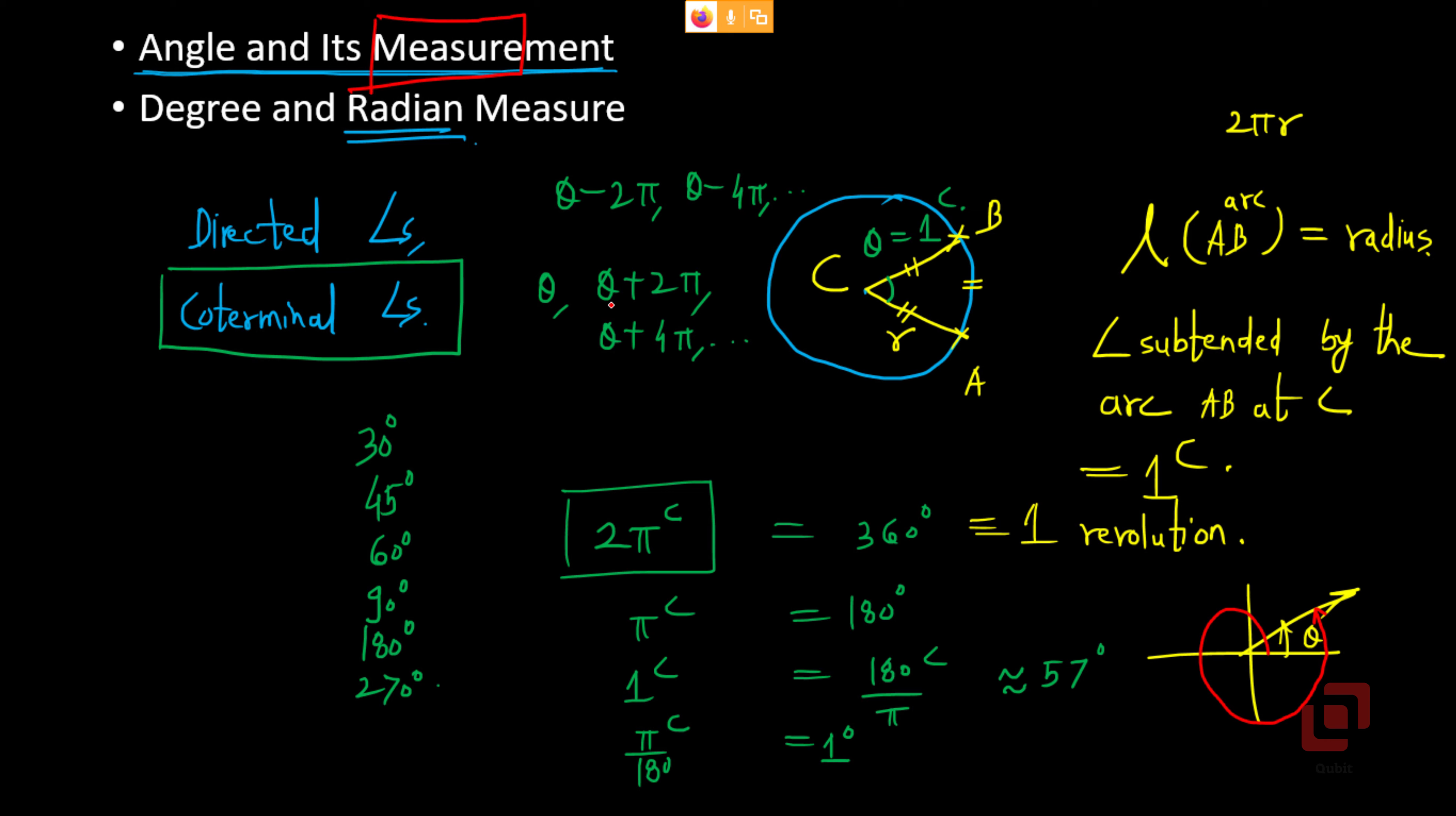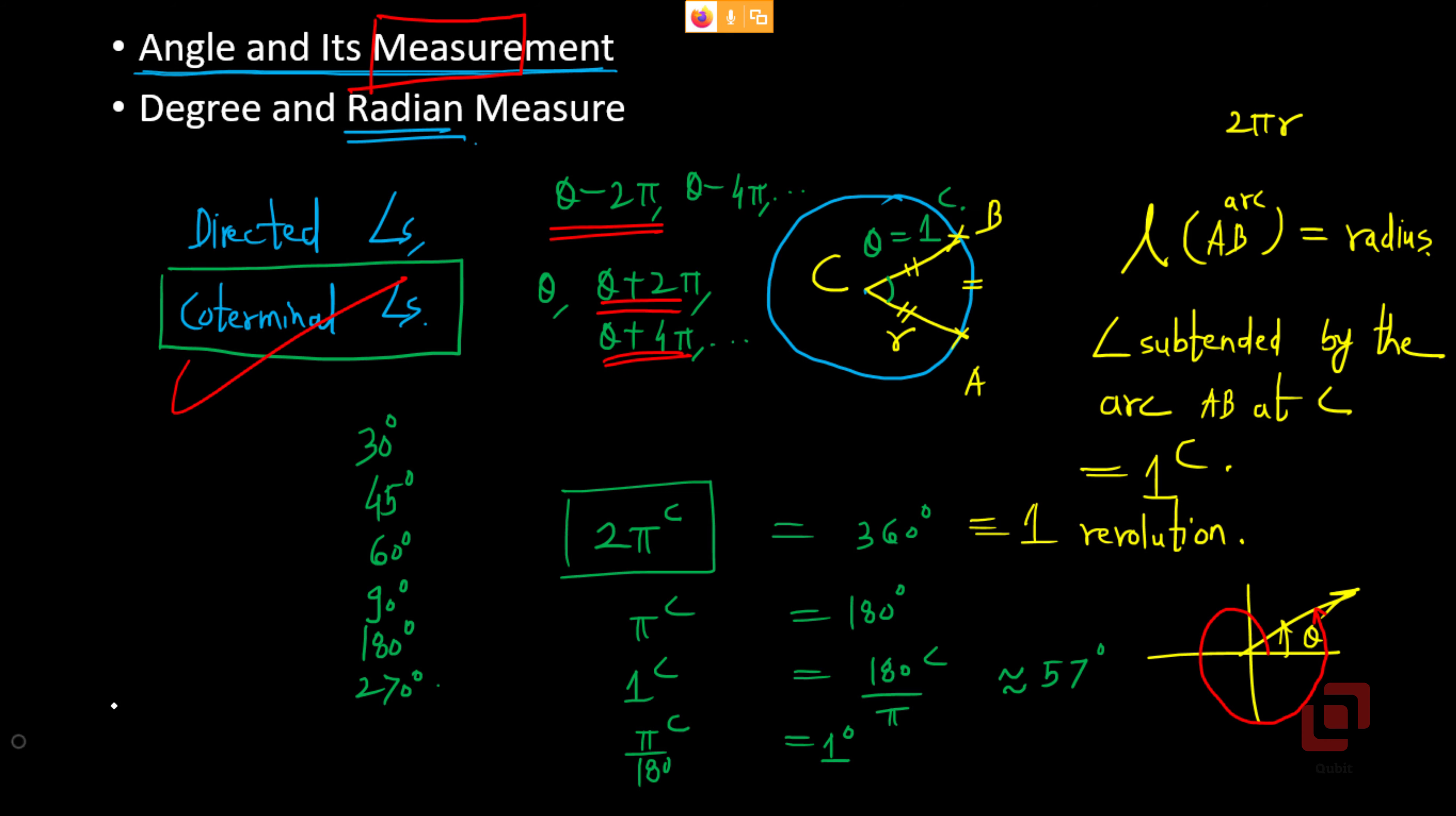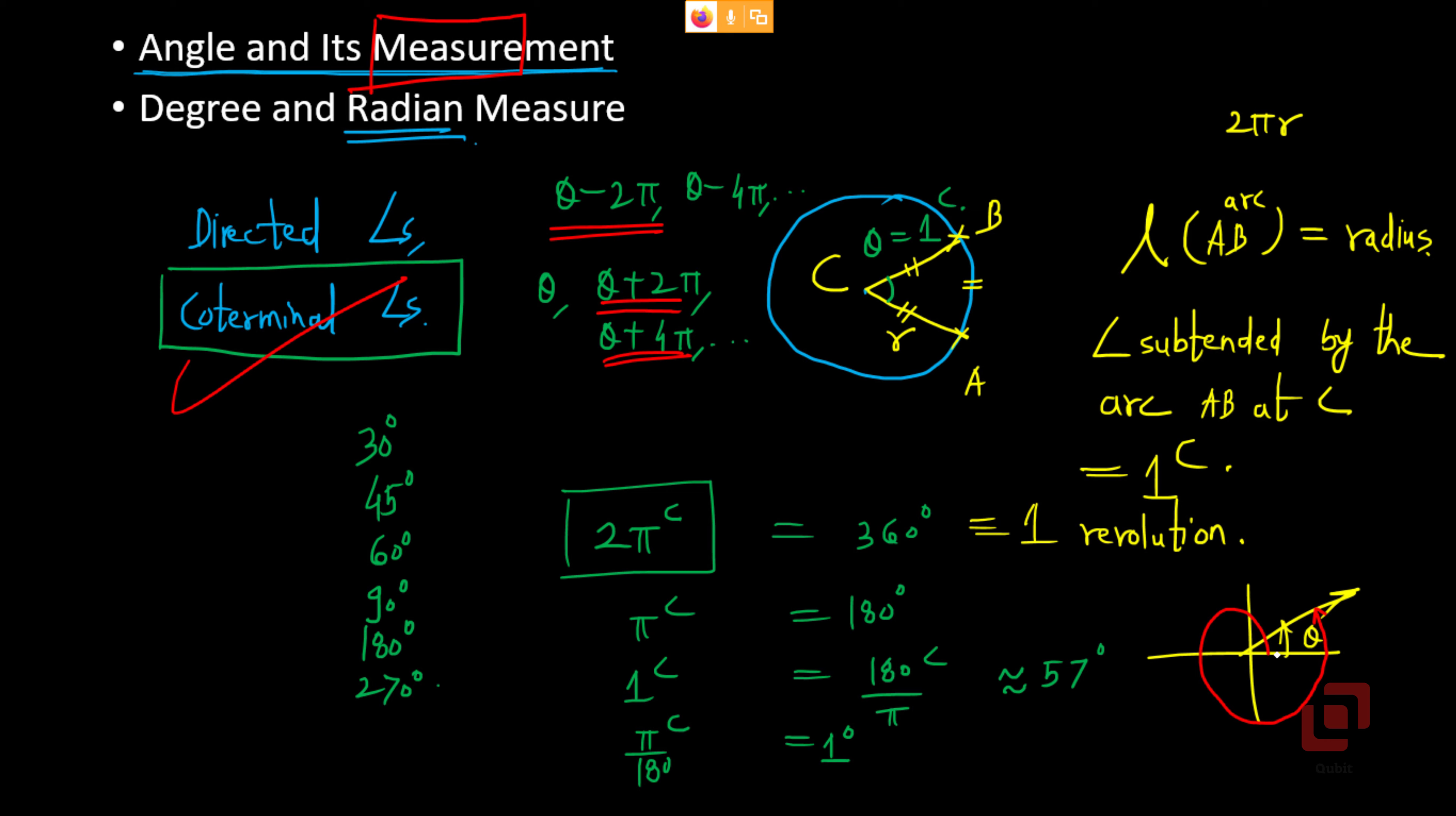So if this is our angle theta measured in the anticlockwise direction, then if we complete one full revolution in anticlockwise direction and then again go to this, the initial and the terminal arms of the angle are same. But the amount of rotation or the measure of the angle is different. Now it has become theta plus 2π. These two are coterminal angles. You actually complete the rotation in clockwise direction and then you go to this angle. Convention is anticlockwise positive, clockwise negative. That is why theta positive and 2π negative.